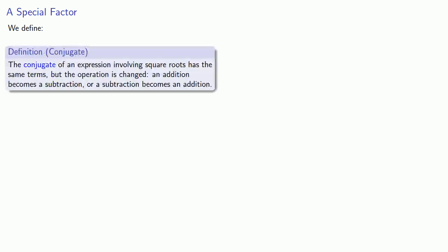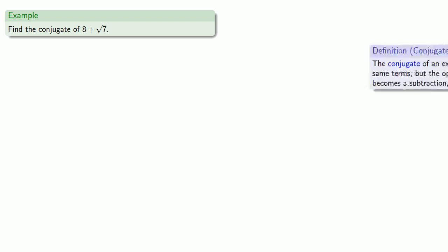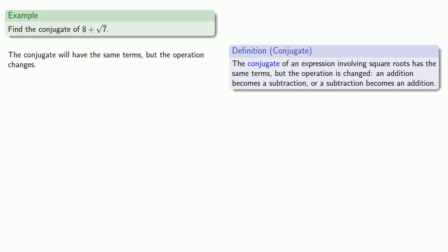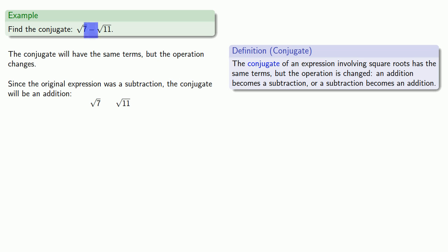Now in all of this, there is one special factor which we define as follows: the conjugate of an expression involving square roots has the same terms, but the operation is changed — so an addition becomes a subtraction, or a subtraction becomes an addition. So the conjugate of 8 plus square root of 7 will have the same terms, 8 and square root of 7, but since the original expression was an addition, the conjugate will be a subtraction. For square root of 7 minus square root of 11, the conjugate will have the same terms but the operation changes, so it becomes an addition.